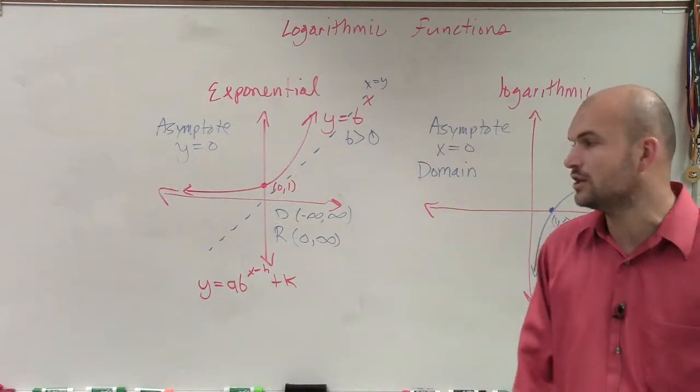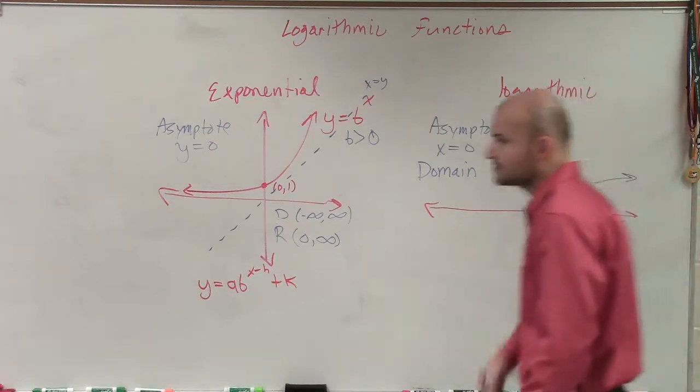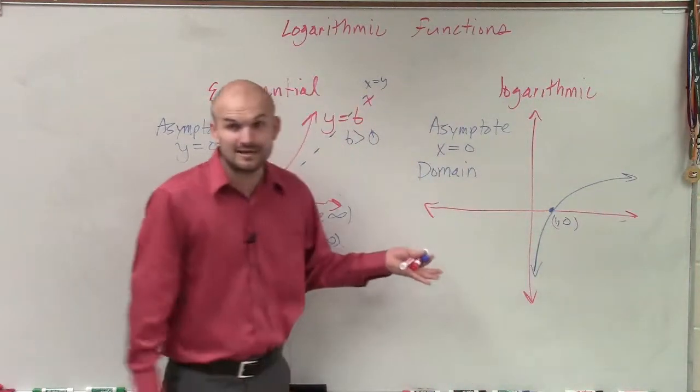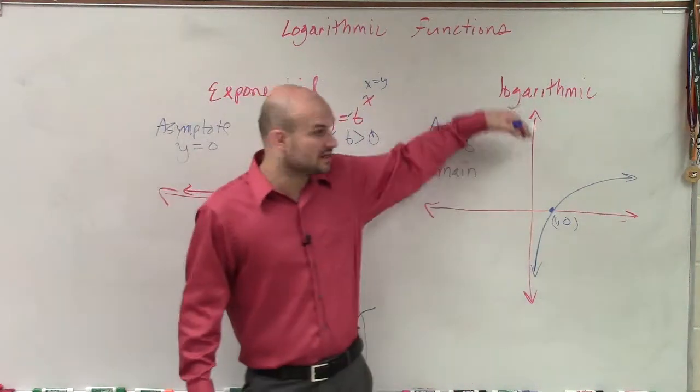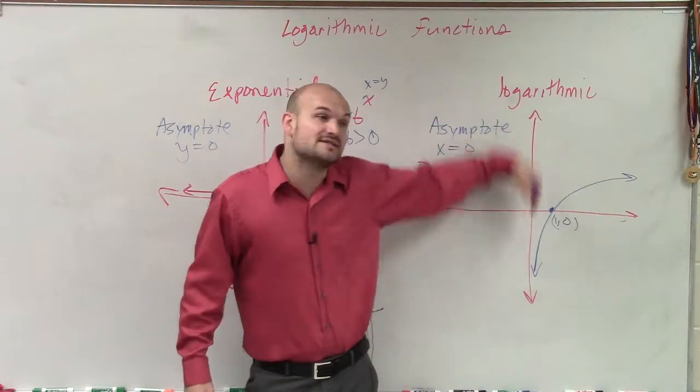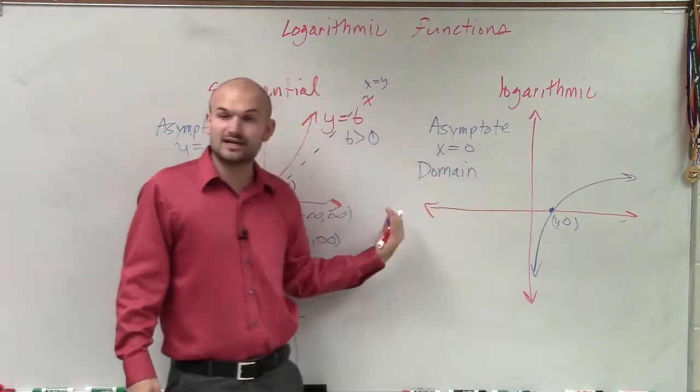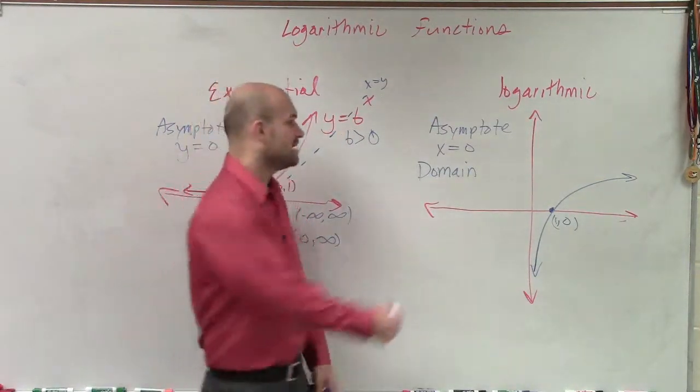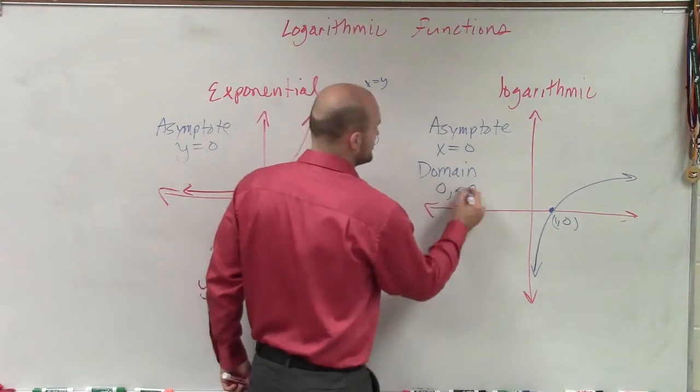So without really discussing what exactly a logarithm is algebraically, we can just look at this graph and determine, well, the domain here is saying it doesn't look like if I have an asymptote at 0, that means it's going to approach 0. It's never going to get across to negative numbers. So now my domain is from 0 to infinity.